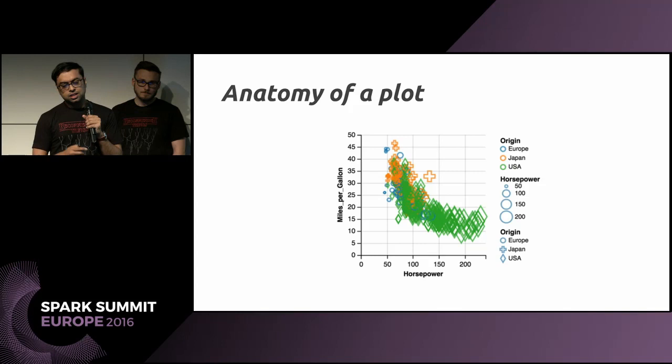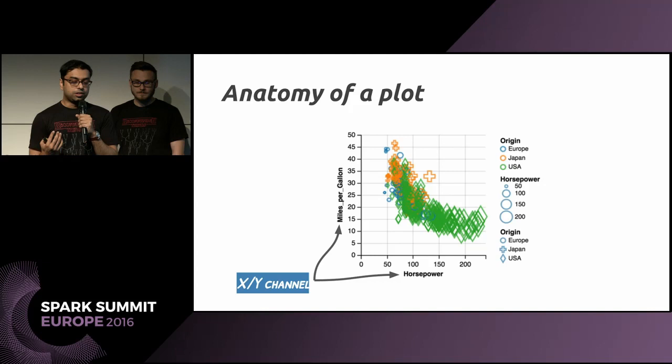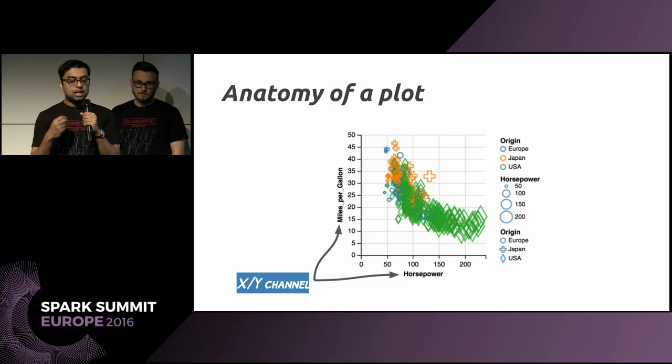Here is an illustrated example of this concept. We have a dataset which has horsepower, miles per gallon, and origin of cars. To visualise it, you load that dataset and say horsepower is going to be my x-axis, miles per gallon is going to be my y-axis. There is this concept of channels — you can declare the variable horsepower as your x-axis, and then say you want the origin of the country — Europe, Japan, USA — to be mapped to a colour channel or a shape channel, so different origins get different shapes or colours.